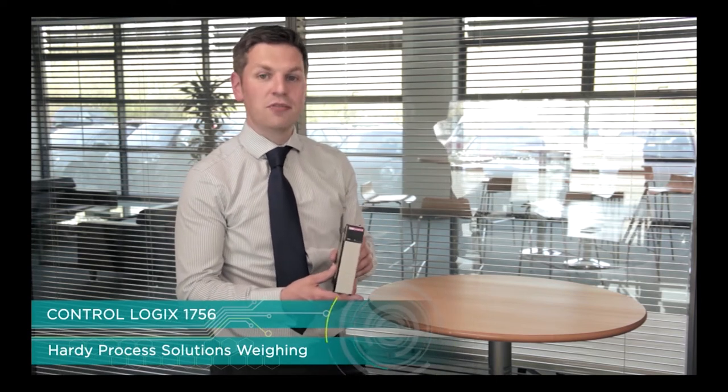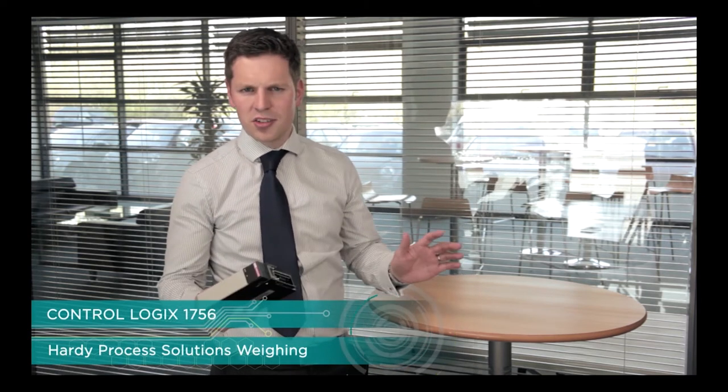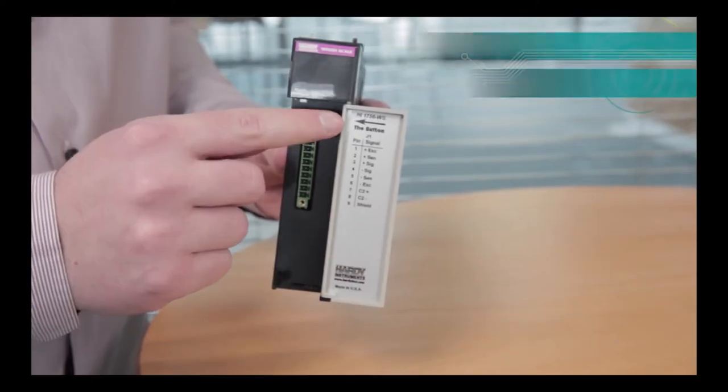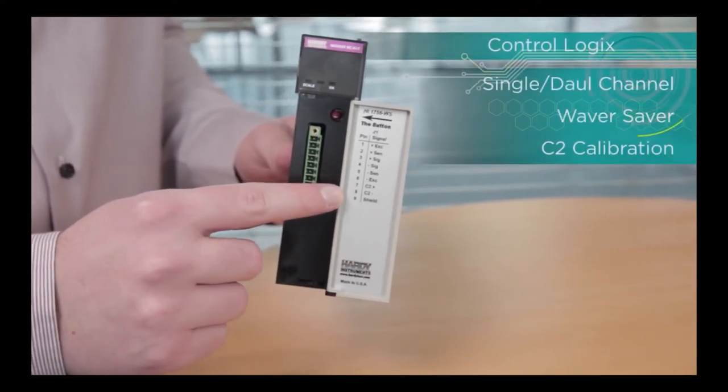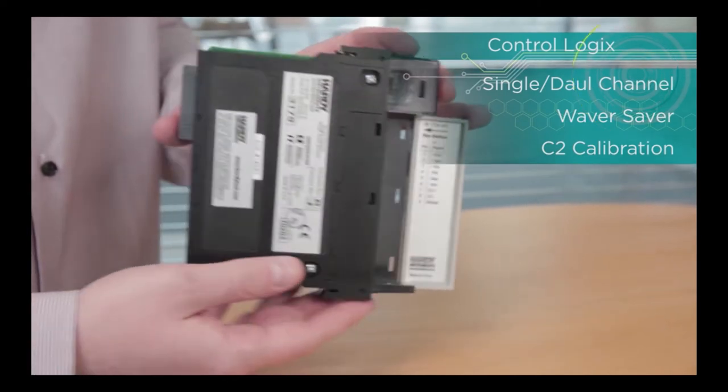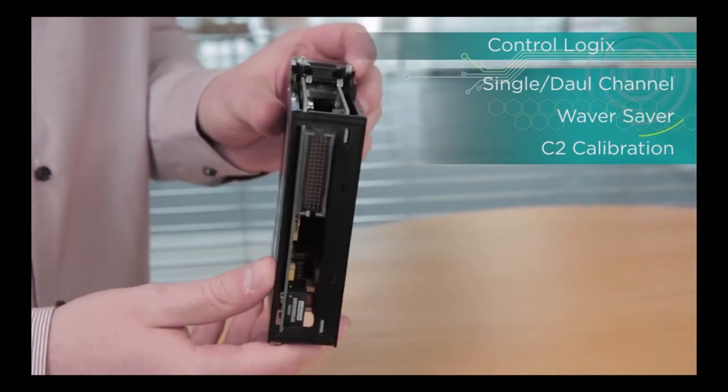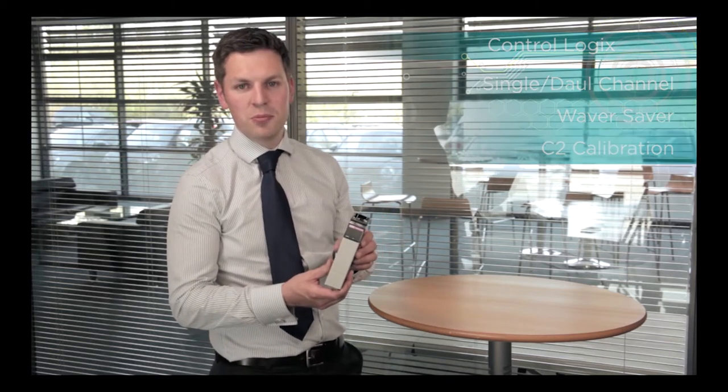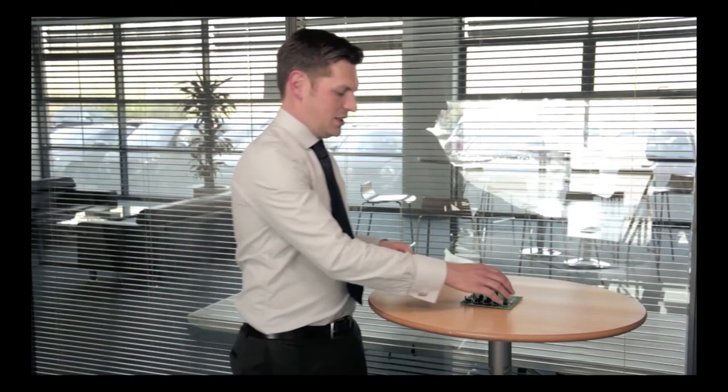Our last in-rack module is Control Logix 1756. It's actually the same idea as the Compact Logix one, available in single or dual channel with all the waver saver, C2, all of that good stuff as well. It's a standard Control Logix module and works in the same way.